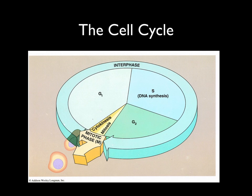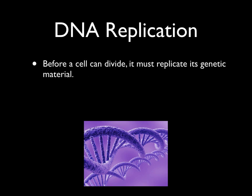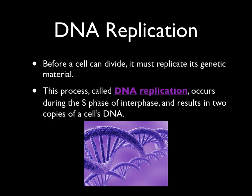Interphase is very important because it's during interphase when those three things that must happen before a cell divides occur: the cell is growing, replicating its cytoplasmic constituents, and copying the DNA. Before we move on, I want to talk in more detail about the S phase — DNA synthesis — and in doing so, we'll look at the process of DNA replication. Before a cell can divide, it has to make a copy of its genetic material. This process is called DNA replication and occurs during the S phase of interphase, resulting in two copies of the cell's DNA.